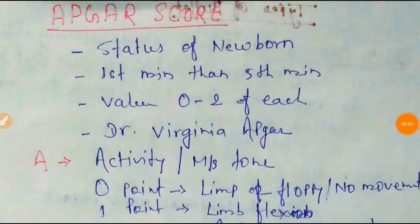Hi doctors, I am Dr. Santosh Jha. Today's topic is the APGAR score — the status of the newborn. It is first taken at the first minute, then after the fifth minute. The value for each parameter is 0 to 2.